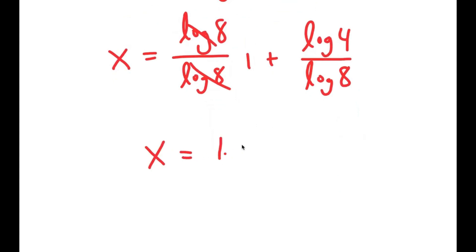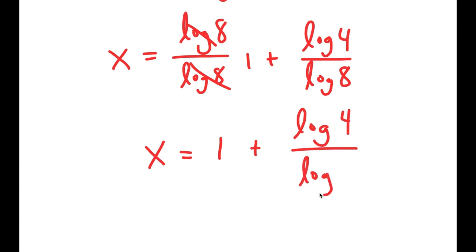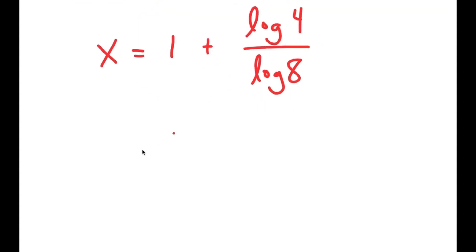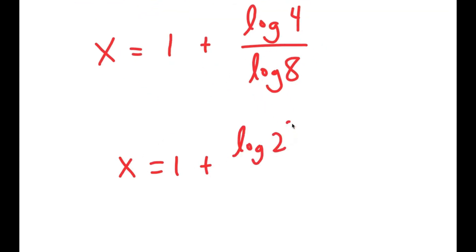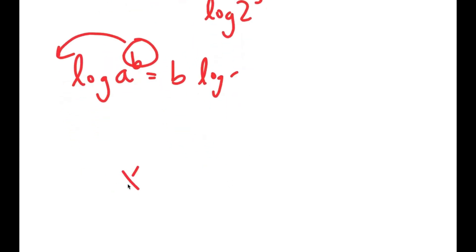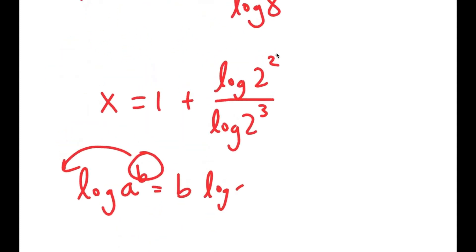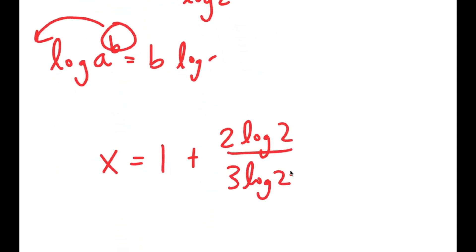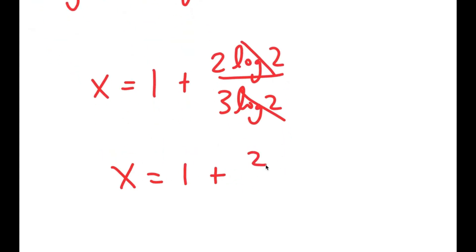These two cancel out to get 1, so I get x is equal to 1 plus log of 4 over log of 8. Now, log of 4 is the same thing as log of 2 squared, and log of 8 is the same thing as log of 2 to the power of 3. I can move the exponents to the front, so I get x is equal to 1 plus 2 times log 2 over 3 times log 2. These two log 2 terms cancel out, and I get x is equal to 1 plus 2 over 3.